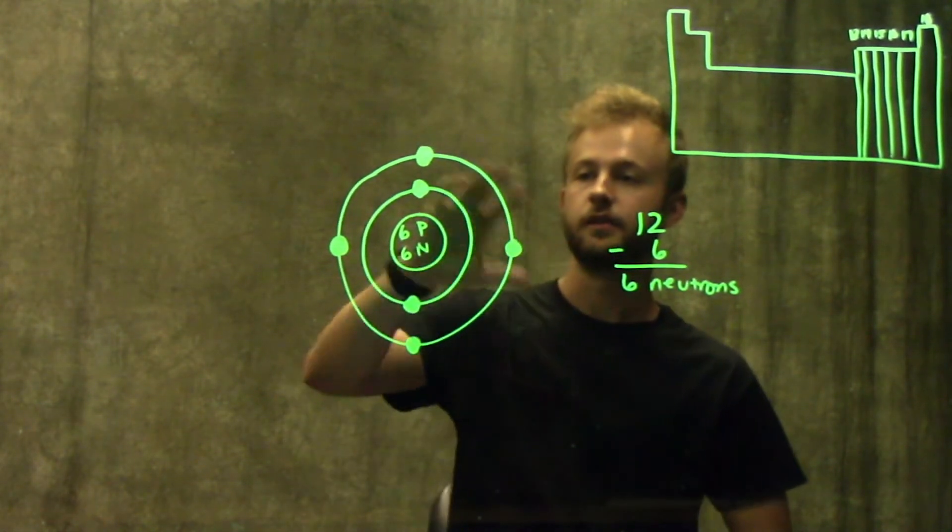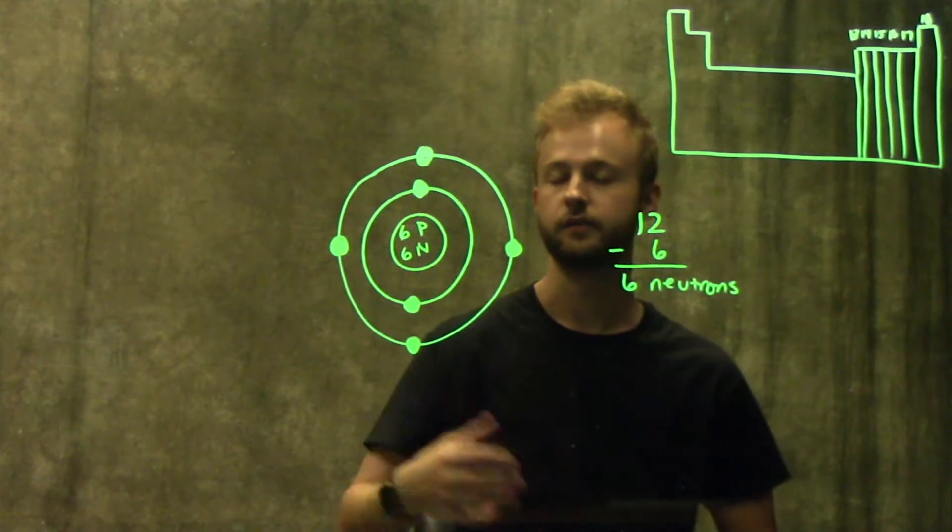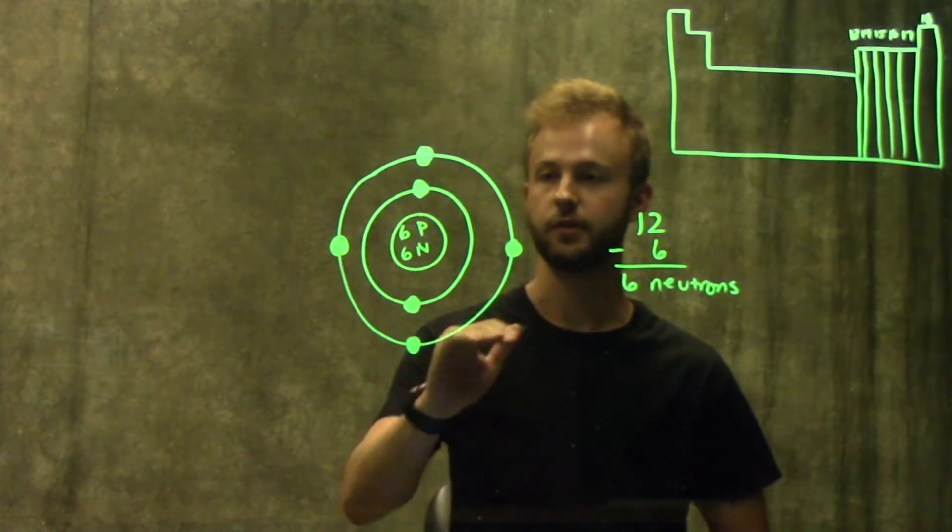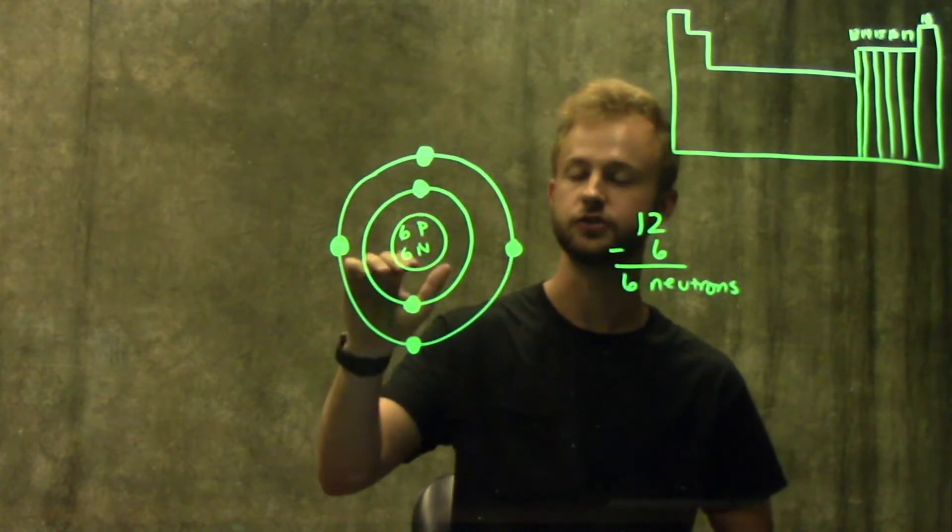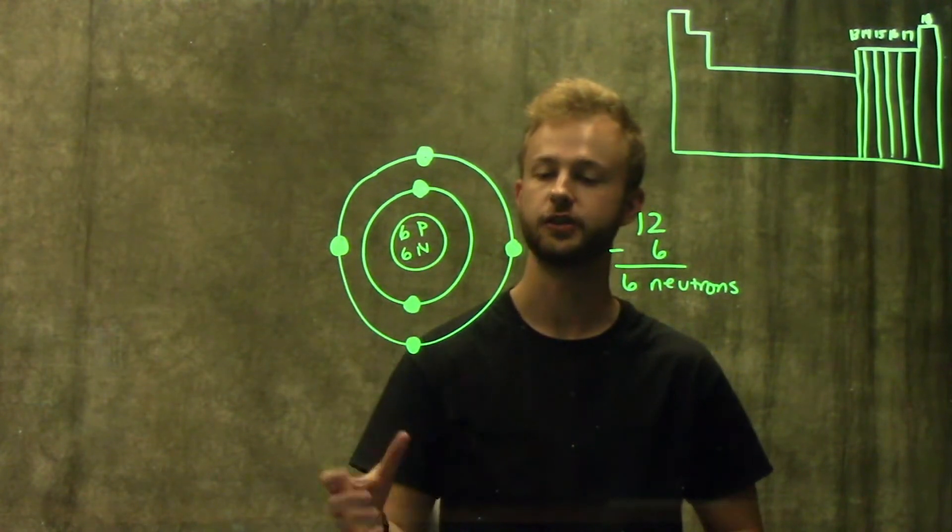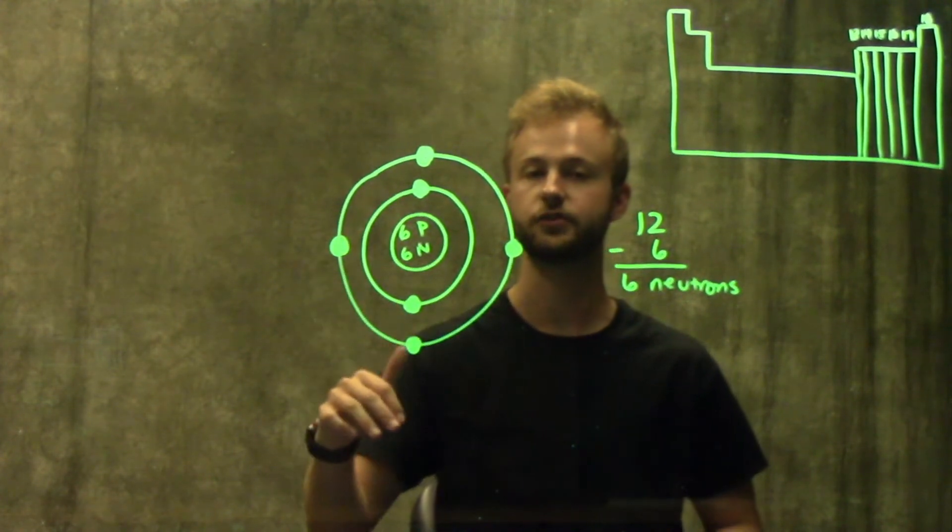Now that we have this whole diagram drawn out, we can pay closer attention to this outer electron shell. This shell is called the valence shell, and these electrons are called the valence electrons.